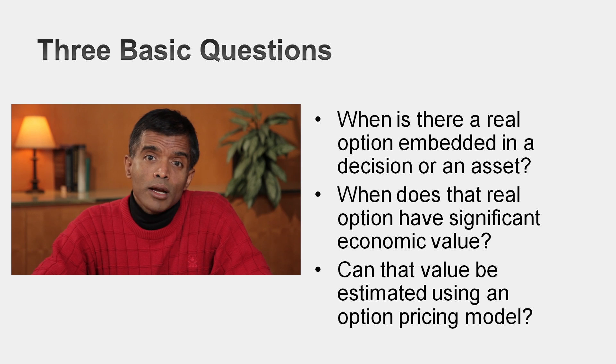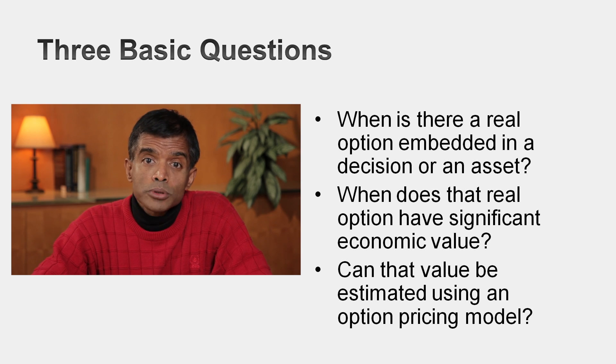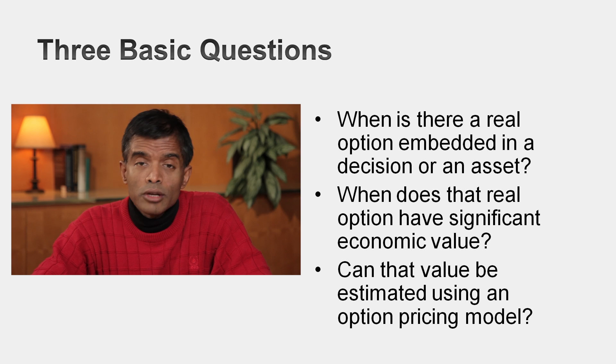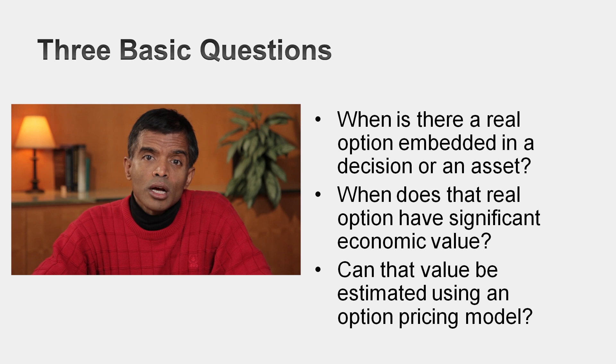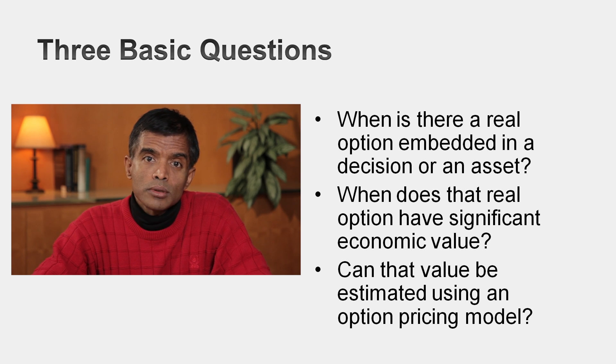Most options that you see out there have either no value or so little value that it's not worth pursuing. The third and final question is: when can I use an option pricing model — those models developed over the last 40 years — to value that option? Let's start with the first question: when is there an option embedded in an action, and when should I be using option pricing?